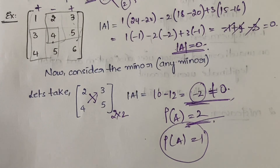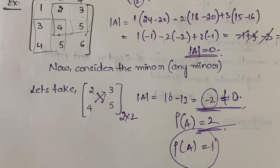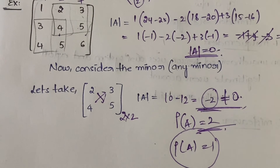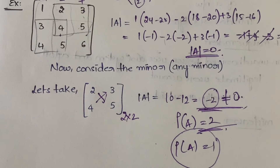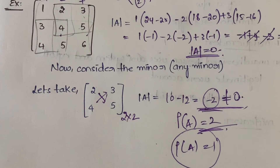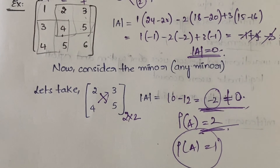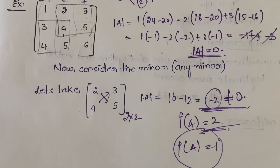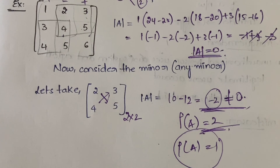That's how you calculate rank using the determinant method. In the next video I'll explain how you calculate the rank using the echelon form, which is also easy. Let me know in the comments how I am explaining — I want feedback especially from first-year engineering students. If you still have any doubts, let me know in the comment section and I will definitely try to clear them. Thanks for watching the video till the end.